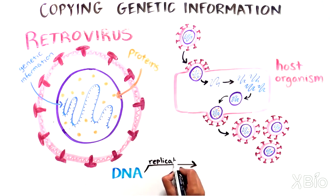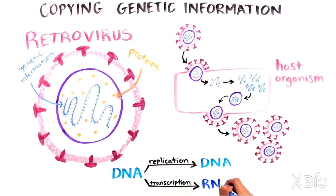Scientists knew how DNA was copied to make more DNA. They also knew how DNA was copied to make RNA. But retroviruses posed a puzzle. How can the RNA in these viruses be copied?